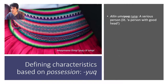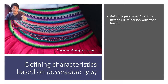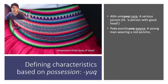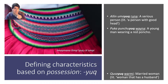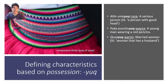'Pukapunchayo huayna' means a young man who wears a red poncho. 'Kosayo huarmi' — 'kosa' means husband — so 'kosayo huarmi' means a woman with a husband, a married woman. You are describing that person with a noun derived using the suffix '-yoj,' which indicates that somebody has this thing as a defining property.